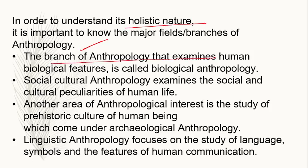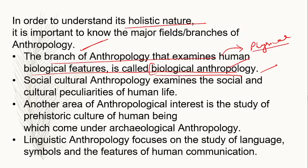The branch of Anthropology that examines human biological features is called Biological Anthropology — it covers biological features such as color, genetics, etc. This is also referred to as Physical Anthropology, though they are not completely the same. Biological Anthropology is a subset of Physical Anthropology, but in some places they are used interchangeably.